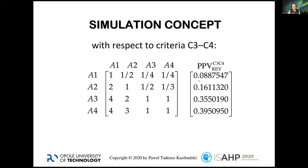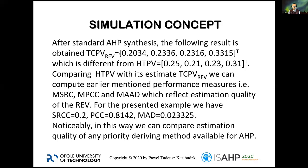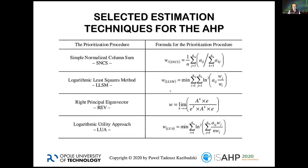I obtained results and could compare the total computed priority vectors with the hypothetical total priority vector. As you can see, the weights are a little bit different, and these differences can be measured by deviations such as mean absolute deviation, Pearson correlation coefficient, or Spearman rank correlation coefficient. I applied such scenarios to a few selected methods.